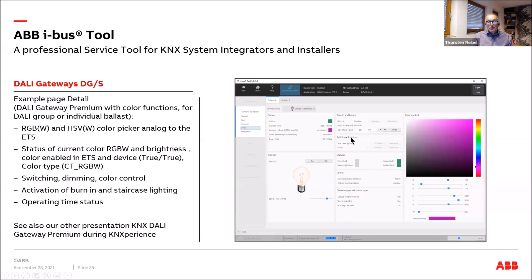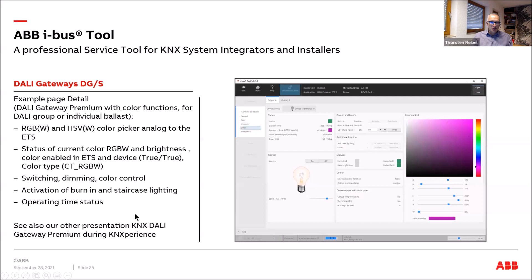For the DALI gateway with color control, a color picker is shown where you can directly select a color and switch the light of a ballast or group on and off to test how the light looks in the room. A slider supports RGB or HSV control principles. You can also dim the light and select which ballast or DALI group to operate. Operating hours are visible here as well.